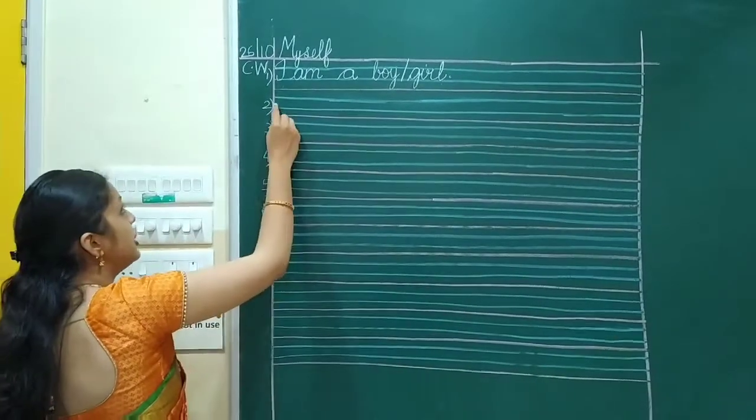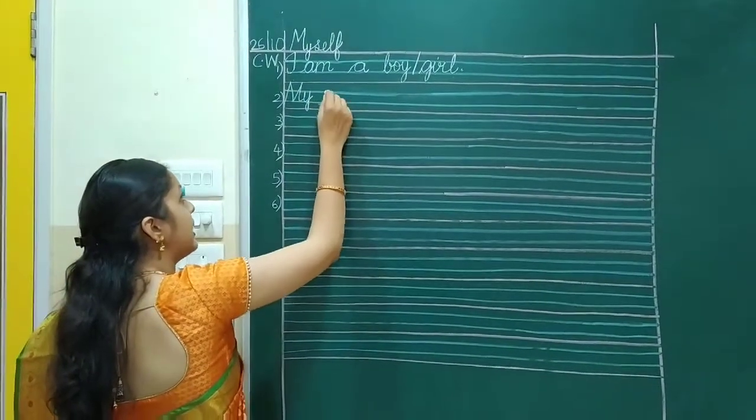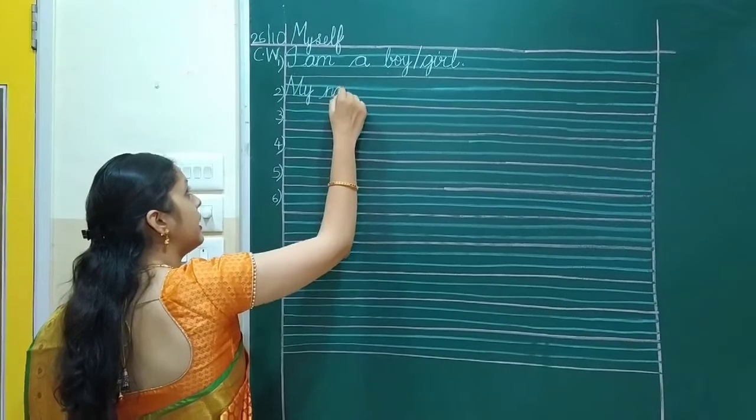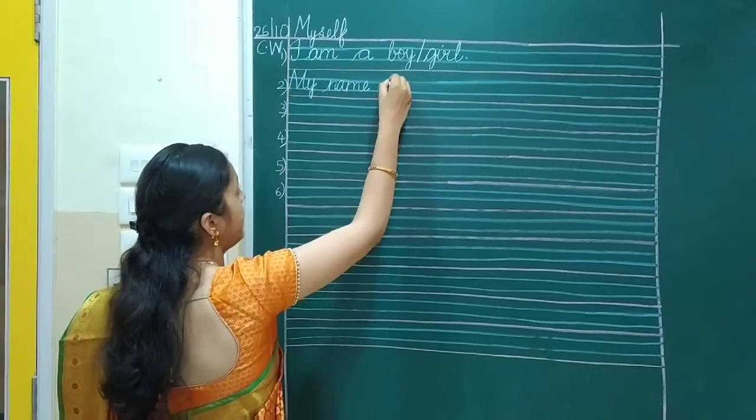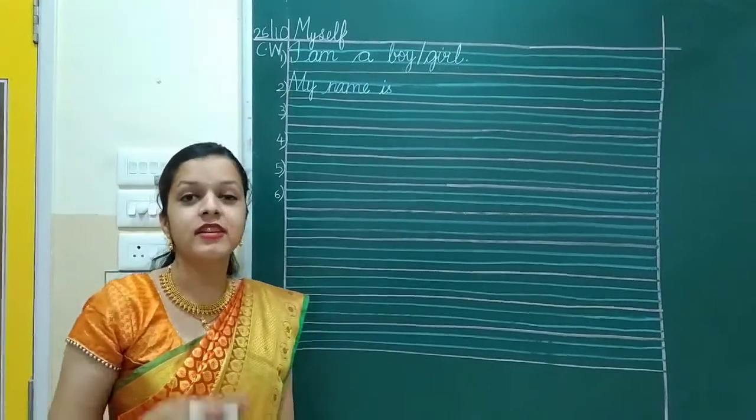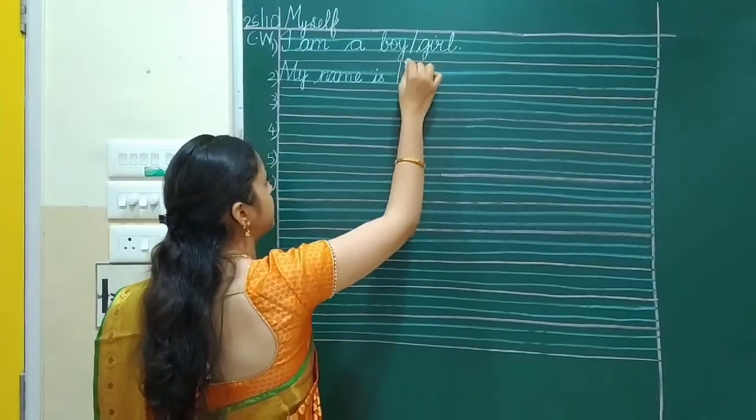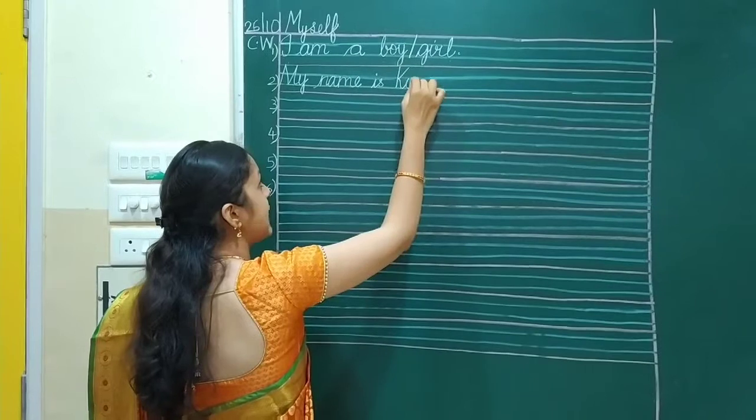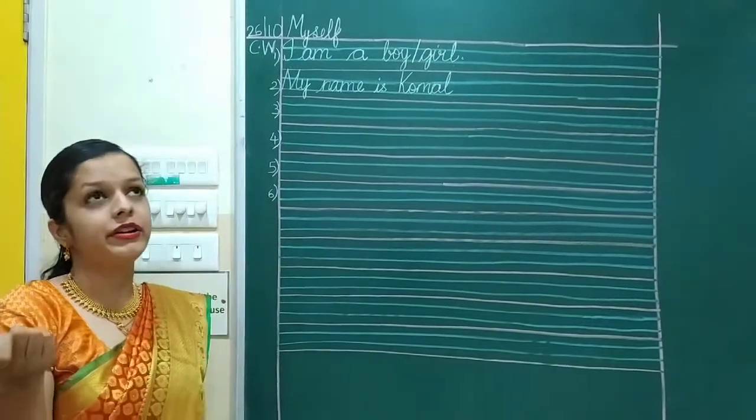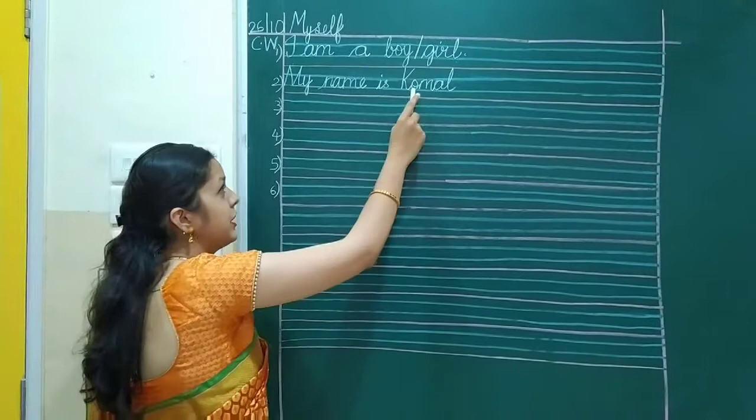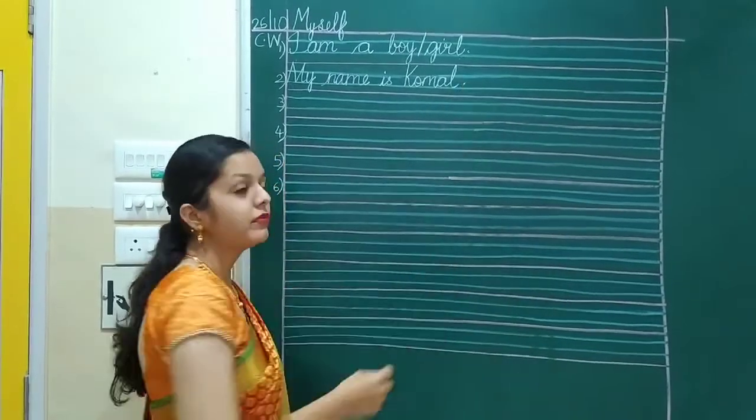Next. So here my M-Y, my N-A-M-E, name. I-S is. My name is Komal. So I am going to write my name. So my first letter is going to be capital. But if it is Yuvansh or Samaruddin Makrang, you are going to write your name over here. I am Komal. That's why I am writing my name over here. And then a full stop. Next.